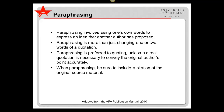Paraphrasing involves using one's own words to express an idea that another author has proposed. Paraphrasing is more than just changing one or two words of a quotation. Paraphrasing is preferred to quoting unless a direct quotation is necessary to convey the original author's point accurately. When paraphrasing, be sure to include a citation of the original source material. Note that APA does not require a page or paragraph number for paraphrased material unless the information is so important or complex that the reader will probably want to refer to the original work.